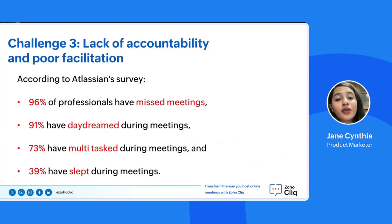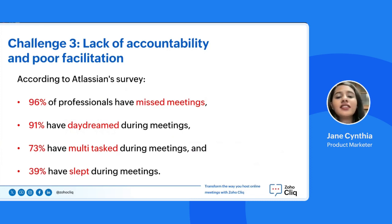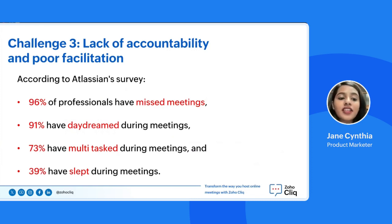Challenge number three is lack of accountability and poor facilitation. Without consequences for inattentiveness, individuals may drift off, multitask, or even shop online. If such behaviours go unchecked and without consequence, what's the incentive for change? Meeting insights from Atlassian showed some shocking statistics: 96% of professionals have missed online meetings, 91% have admitted to daydreaming during online meetings, 73% have multitasked during meetings, and 39% have slept during meetings. In other cases, people don't talk at all or they talk on top of each other, and people aren't clear on where we are or what comes next. Hence, online meetings need better facilitation in order to be more successful and less awkward.